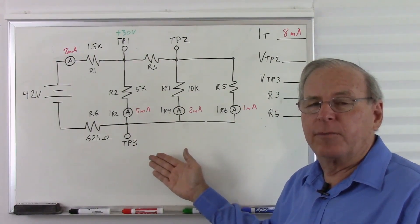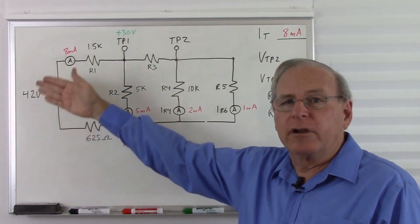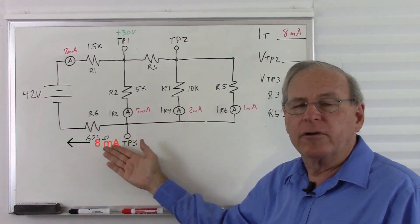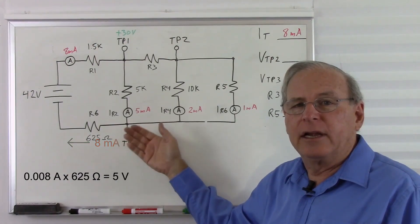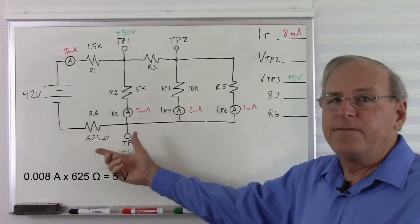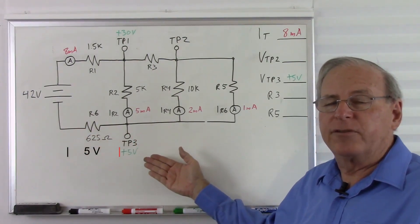Now let's tackle the voltage at test point 3. We know that there is 8 milliamps flowing through this part of the circuit, so there's 8 milliamps flowing through this 625 ohm resistor. So 0.008 times 625 gives us 5 volts. Start at 0, add 5, so we have plus 5 volts here.